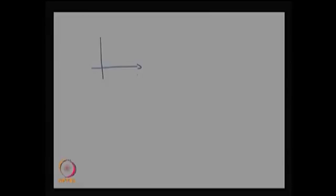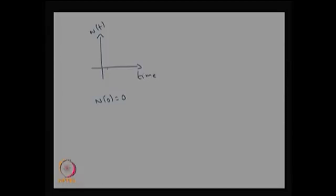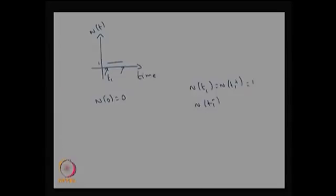We can look at the sample path of N(t) over time — the different values N(t) takes. Obviously N(0) = 0. Whenever an arrival occurs at some time, I mark it with an up arrow. The value of N(t) is incremented by 1 until the next arrival comes. N(t) is a right-continuous function. At the first arrival time t1, N(t1-) = 0, while N(t1) and N(t1+) = 1, whereas the left limit N(t1-) is 0.